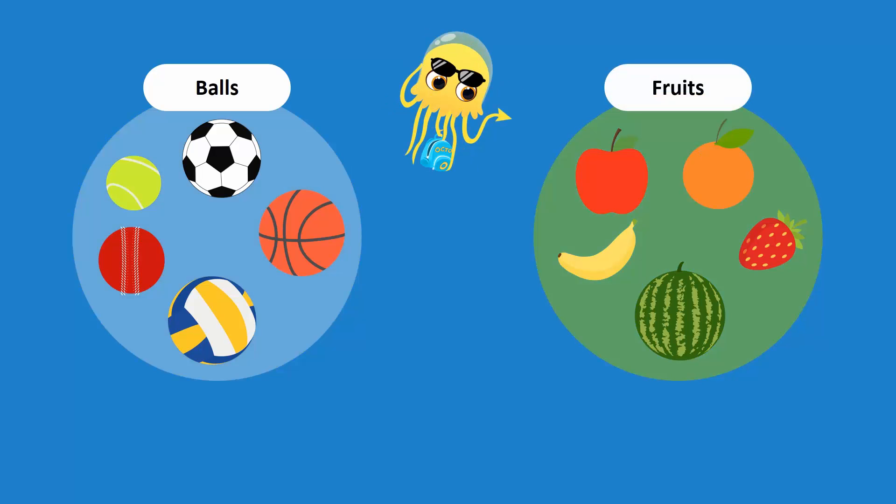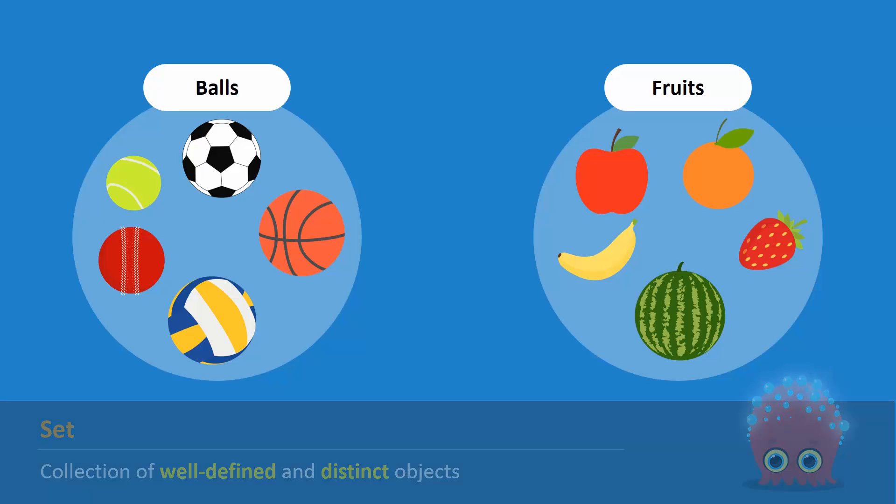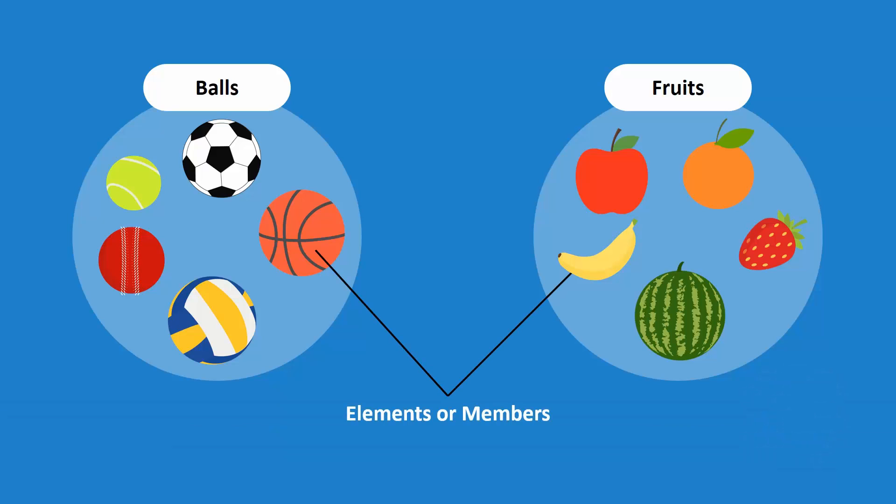Since both groups are collections of well-defined and distinct objects, both are sets. Each object of a set is also called an element or member of that set.